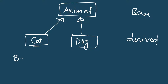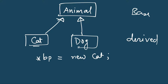In C++ we are allowed to make a base class pointer point to an object of a derived class. We can do that because Cat is also an Animal. Here the base class is Animal, and we are talking about public inheritance. So creating an object of class Cat and assigning it to a base class Animal pointer is fine.